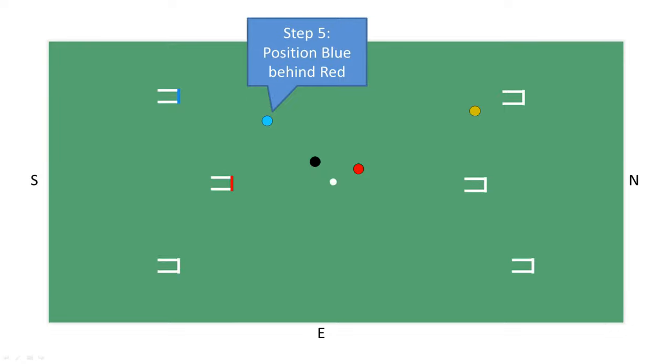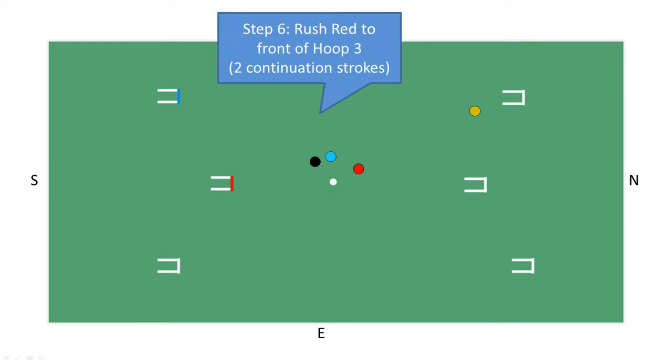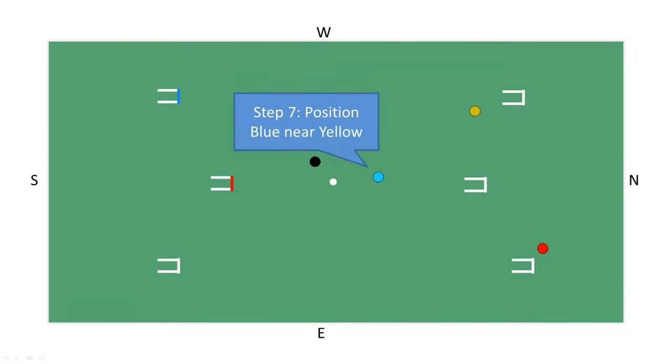The temptation for a new player is to now go down and use yellow to run hoop 2. This is all very well and possible, however assuming that they run hoop 2, we now have nothing to use at hoop 3. So blue uses its first continuation stroke to a position behind red, and then its second continuation stroke to rush red to be in front of hoop 3, a pioneer position.